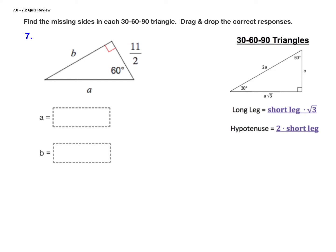Number 7 has us finding the missing sides in each of the 30-60-90 triangles, and again we'll drag and drop the correct responses. Remember that in a 30-60-90 degree triangle, everything is based on the short leg, which is the leg across from the 30 degree angle.